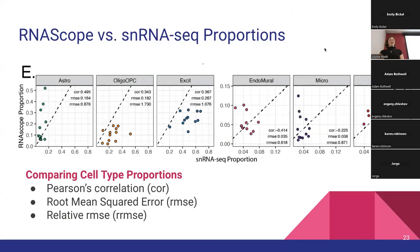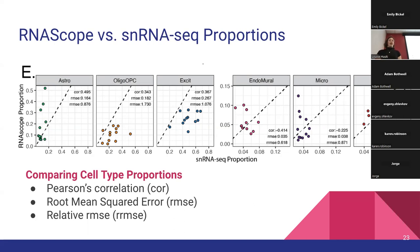Comparing RNA scope versus single nucleus RNA-seq proportions sample to sample, we got a nice correlation for inhibitory neurons, but for other cell types not so much. We think single nucleus RNA-seq might not be the best measurement of cell type proportions — it can be biased by the QC process of single nucleus RNA-seq. We think RNA scope might be a little more reliable, but this also shows that you can get different proportions based on different measurement methods.